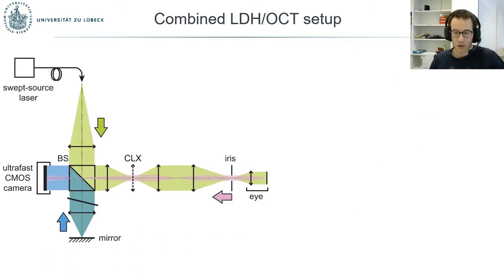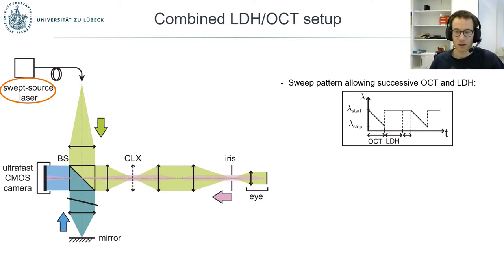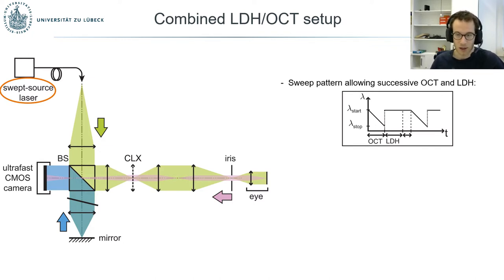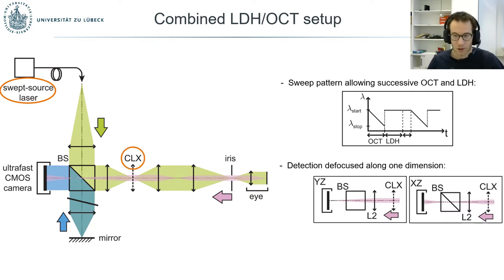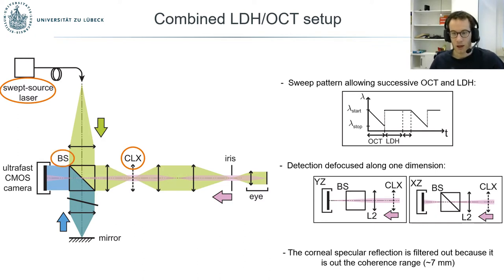Here is the setup we use to combine both modalities. The swept-source laser used for OCT can naturally alternate between OCT and LDH imaging, because at the end of each sweep the laser positions itself on the starting wavelength and remains stable there. That stable-wavelength time can be used to perform Doppler imaging, making it simple to alternate between the two modalities with the same light source. We added a cylindrical lens to introduce defocus along one dimension, preserving sharp lateral contrast for live preview on one dimension while benefiting from defocused detection on the other. A normal beam splitter cube could be used because the specular reflection from the cornea was simply out of the coherence range.